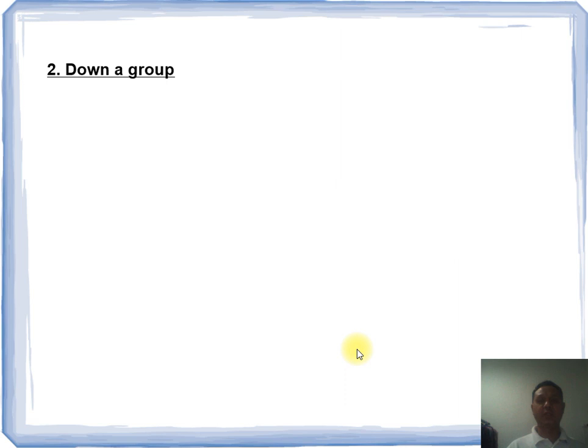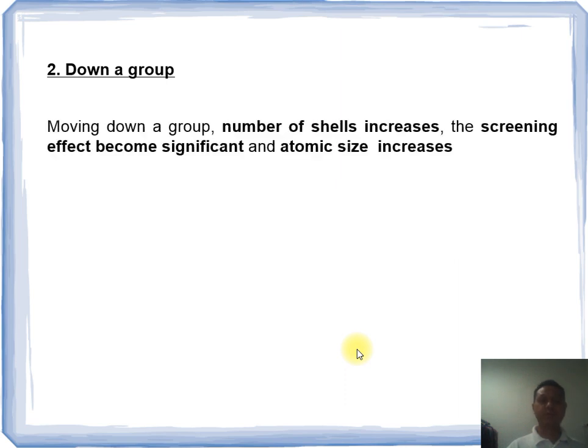Trend number two: down a group. When moving down a group, the number of shells increases. The screening effect becomes significant and atomic size increases.